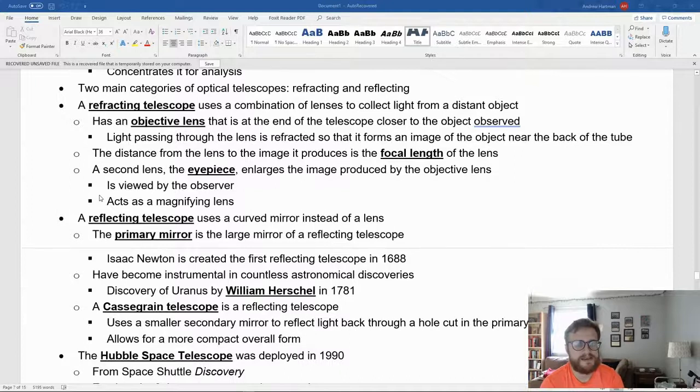A telescope uses a combination of lenses and mirrors to collect light from distant objects. We have two main types of optical telescopes: refracting and reflecting. The easiest way to remember this is that mirrors reflect, lenses refract. So reflecting telescopes use mirrors, refracting use lenses.